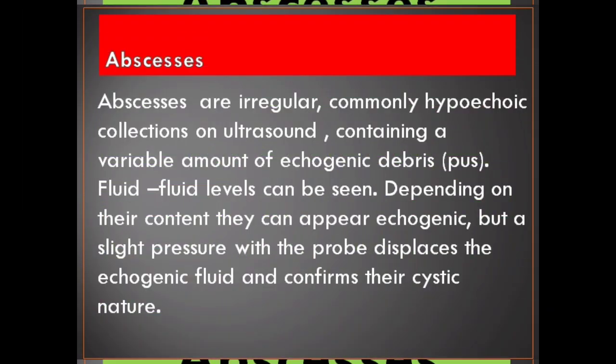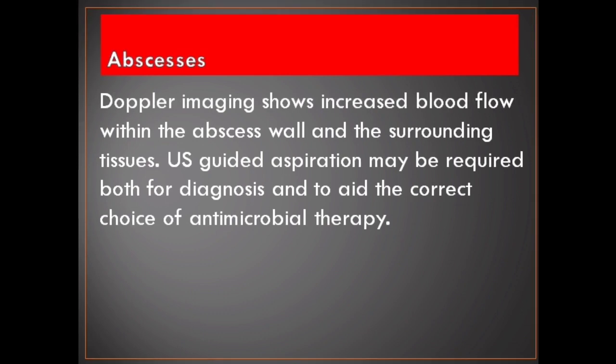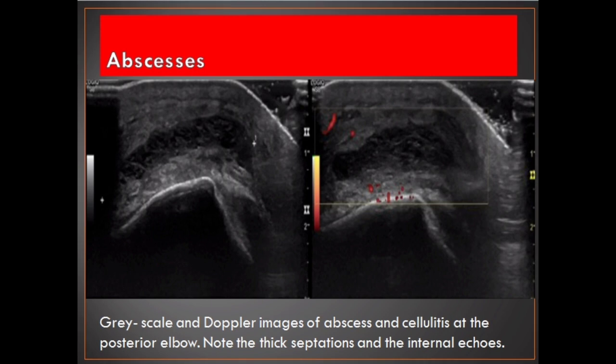Abscesses. Abscesses are irregular, commonly hypoechoic collections on ultrasound, containing a variable amount of echogenic debris (pus). Fluid-fluid levels can be seen; depending on their content they can appear echogenic, but slight pressure with the probe displaces the echogenic fluid and confirms their cystic nature. Doppler imaging shows increased blood flow within the abscess wall and surrounding tissues. Ultrasound-guided aspiration may be required both for diagnosis and to aid the correct choice of antimicrobial therapy. Grayscale and Doppler images of an abscess in cellulitis at the posterior elbow — note the thick septations and internal echoes.